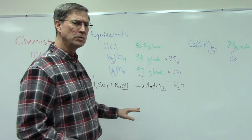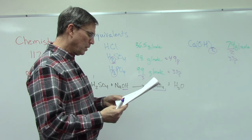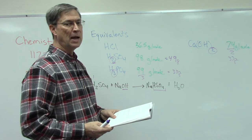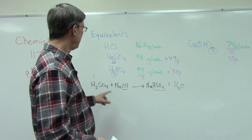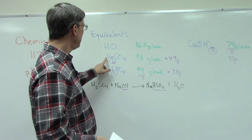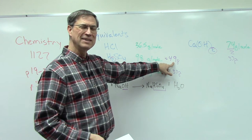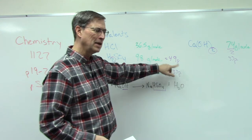But here's where it gets tricky and where the score key is wrong. It says find the equivalent mass of H2SO4 in the same reaction. Now at first glance, you may think, oh, I need to take H2SO4, 98 grams per mole, divide by 2 and get 49. And that's what the score key says, but it's not correct.